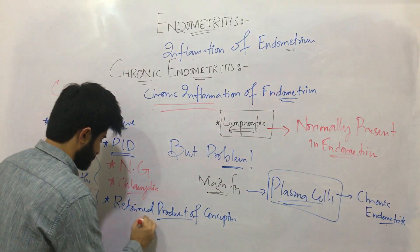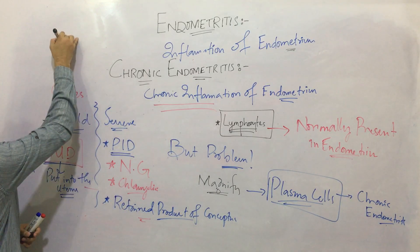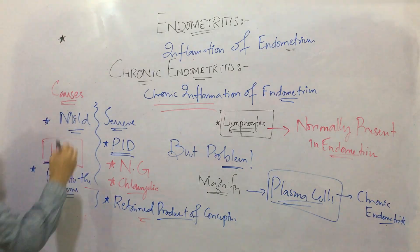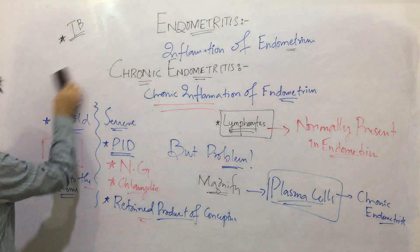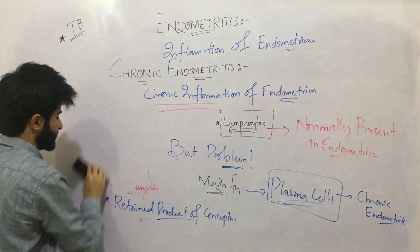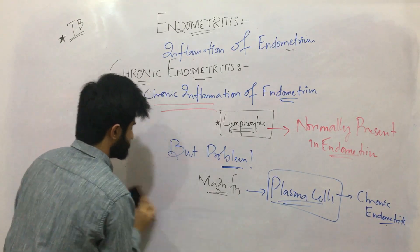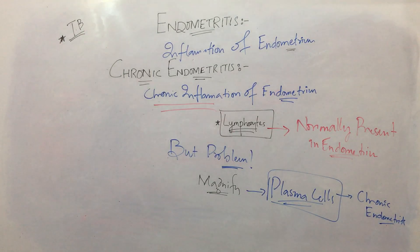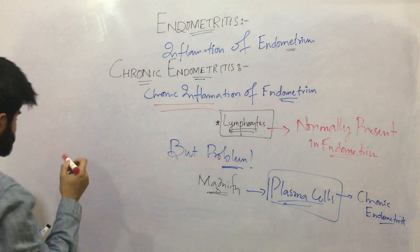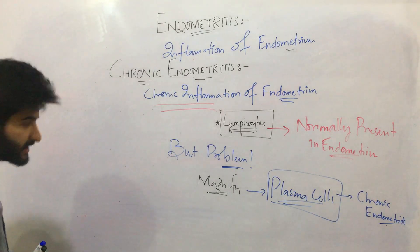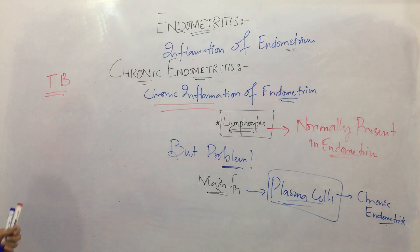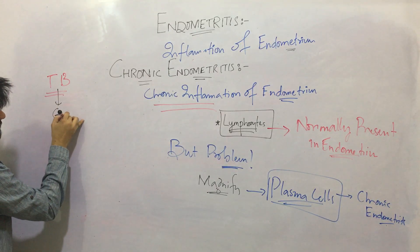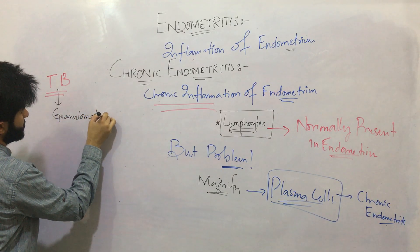There can be a fourth cause, and that is tuberculosis. So up till now we have studied four causes of chronic endometritis: number one, intrauterine device; number two, Neisseria gonorrhoeae and Chlamydia trachomatis leading to Pelvic Inflammatory Disease; number three, Retained Product of Conceptus; and number four, tuberculosis. If there is tuberculosis, it will lead to granulomatous inflammation.